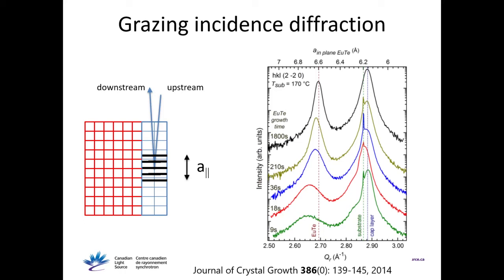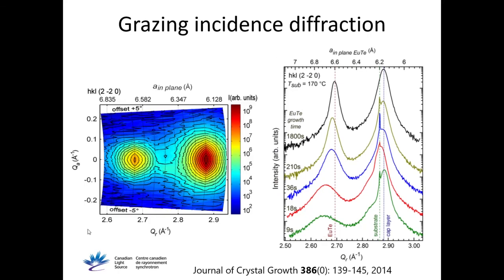If instead of doing one scan we do many scans and stitch them together, we get what we call a reciprocal space map. Usually you see single linear scans, but if you measure many like this and stitch them together, you get a two-dimensional measurement. This is a reciprocal space map, and you get more information. It takes longer, but synchrotrons have lots of flux so it pays off.